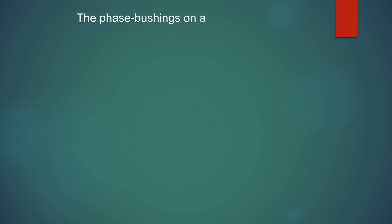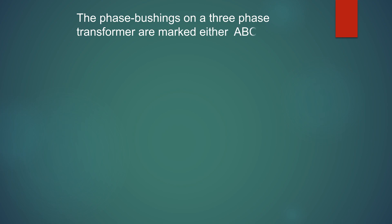The phase bushings on three-phase transformers are marked either A, B, C or U, V, W, or 1 to 3, with the HV side in capital letters and the LV side in small letters.